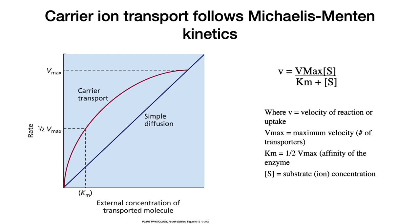V max is equal to the maximum velocity, which can be equated to the number of transporters in that membrane. Km is defined as the rate at half V max — that is, the concentration of the substrate at half V max. We can see the dotted lines from half V max down to the Km, and this is the external concentration of the transported molecule. Another term for the Km of an enzyme or ion transporter is the affinity. So the Km represents the affinity of the ion transporter to bind the ion. At a lower Km, it has a higher affinity — it's able to bind the same amount of ion at a concentration that is lower than another enzyme or transporter.